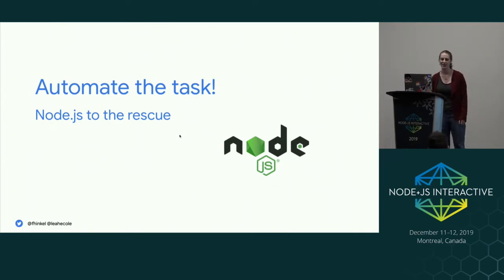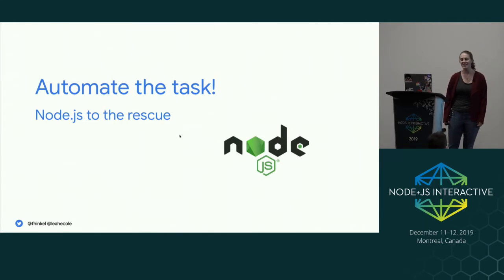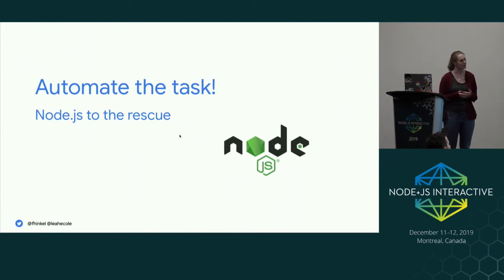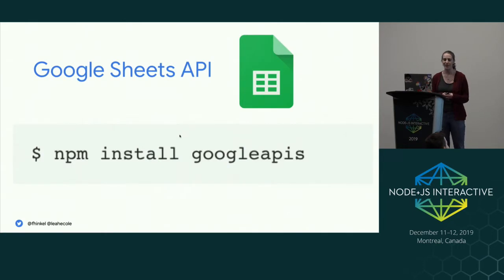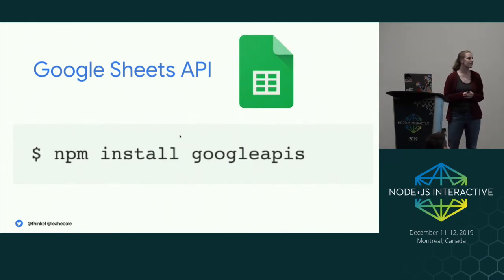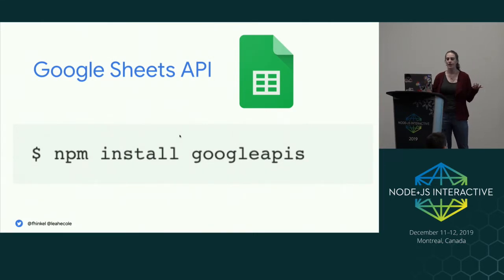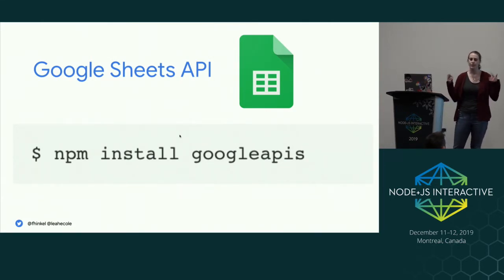Franzi is a Node core contributor and on the technical steering committee. Before working with her, I gravitated towards Python and Java, but especially now that async/await makes things more readable, I definitely gravitate more towards Node for automating. So we're going to start by writing a Node application to work with Sheets. We'll install the Google APIs client library from the NPM registry like so — it's a full-fledged API for talking to Sheets.